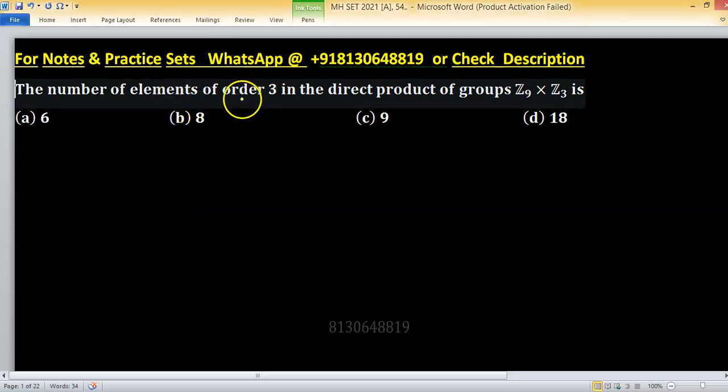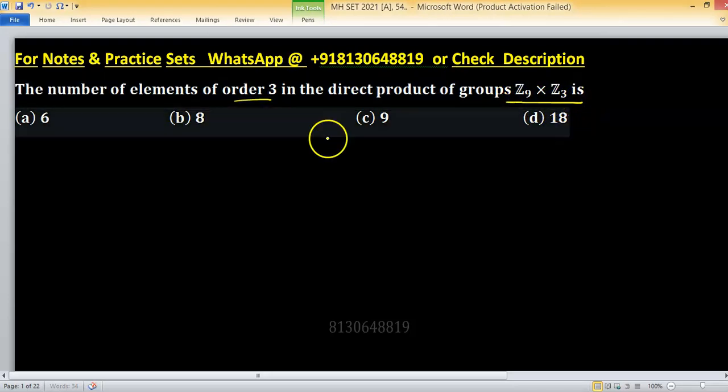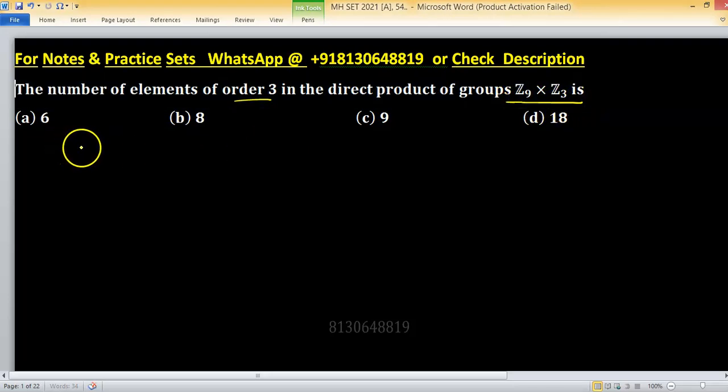The number of elements of order 3 in the direct product of Z9 cross Z3. So how to find a specific order in cross product or direct product? We need order 3, so 3 equals to LCM of...